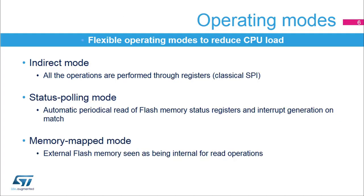The Quad SPI memory interface operates in three modes. One: indirect mode, where it behaves as a classical SPI interface and all operations are performed through registers. Two: status polling mode, where the flash status registers are read periodically with interrupt generation. Three: memory mapped mode, where the external memory is seen as an internal memory for read operations.